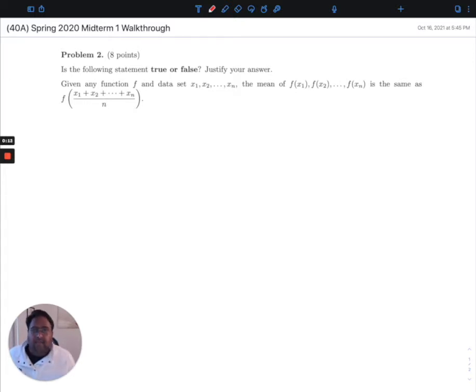Given any function f and the data set x1, x2, all the way to xn, the mean of the f of x's is the same as f of the mean of the x's.